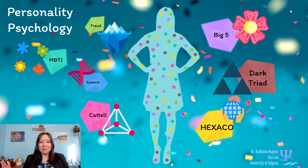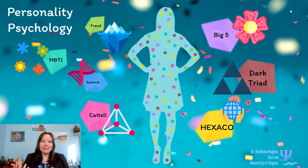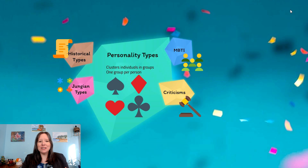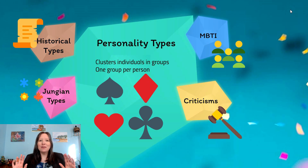All right, so we finished talking about Freud's theory of personality, but it's important to understand that lots of Freud's contemporaries were talking about personality as well. Eric Erikson has his theory of psychosocial development, Adler has his theory of inferiority complex and birth order, and Carl Jung tapped into the theory of personality types.